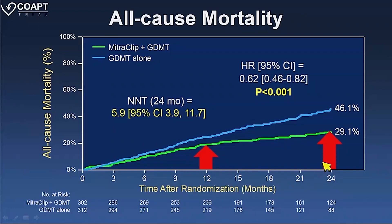Early on, because of that reduction in high-pressure blood going to the left atrium, we saw a decrease in hospitalizations. But it took over 12 months to really start to see a change in the curves for all-cause mortality, reflecting a change in disease trajectory. At the end of 24 months, we saw a number needed to treat of just under six patients to reduce mortality in those with secondary MR.